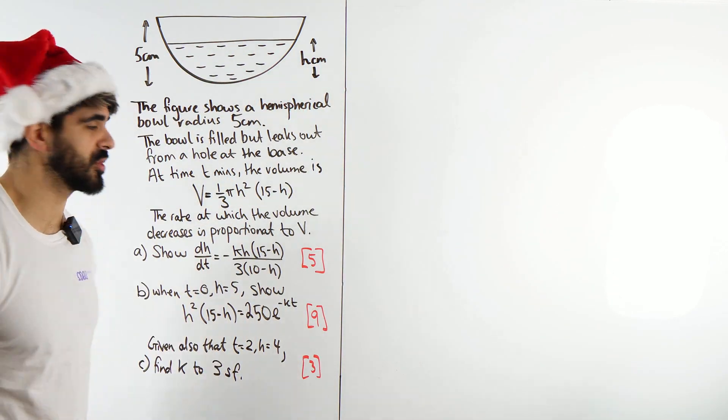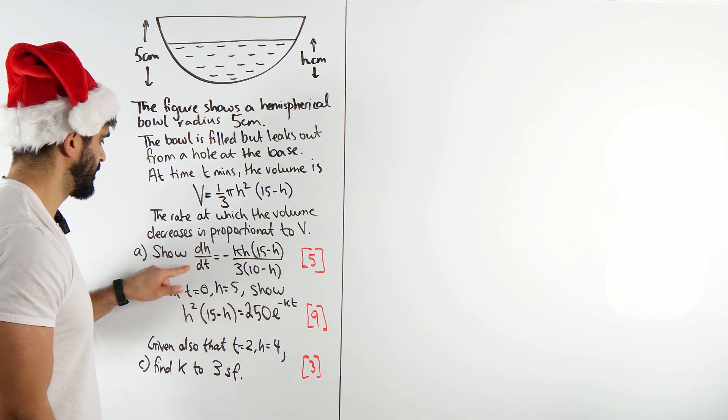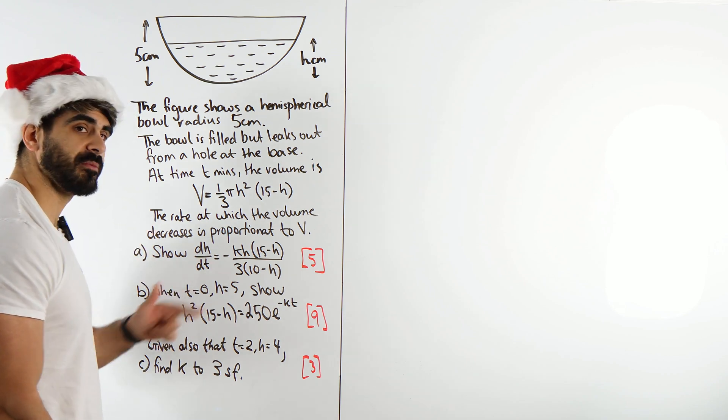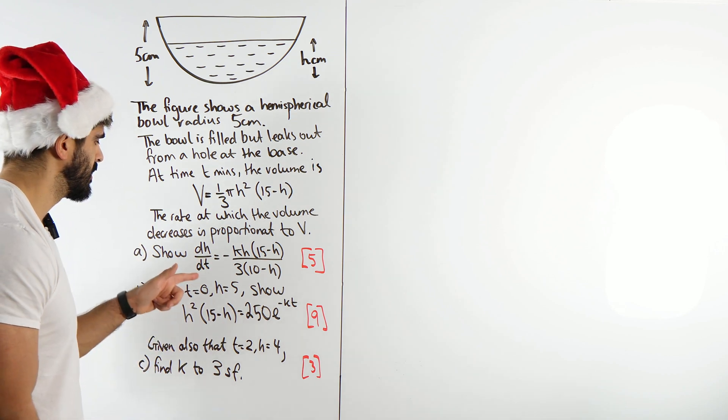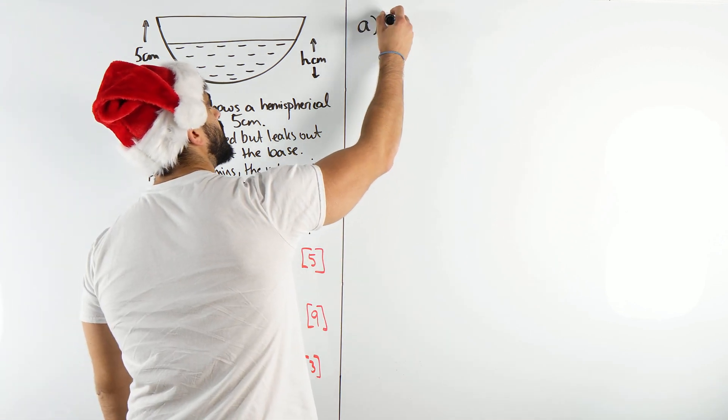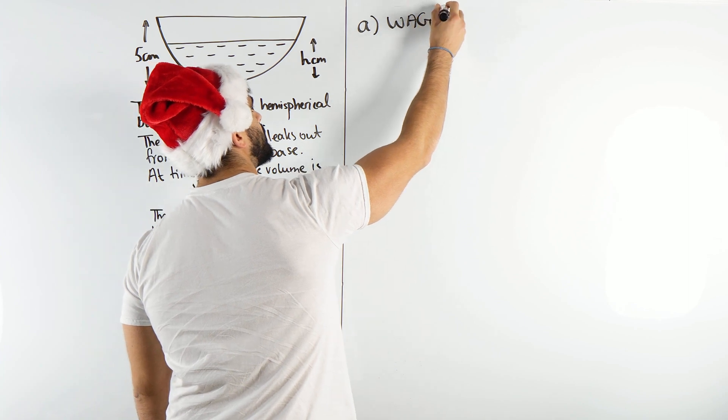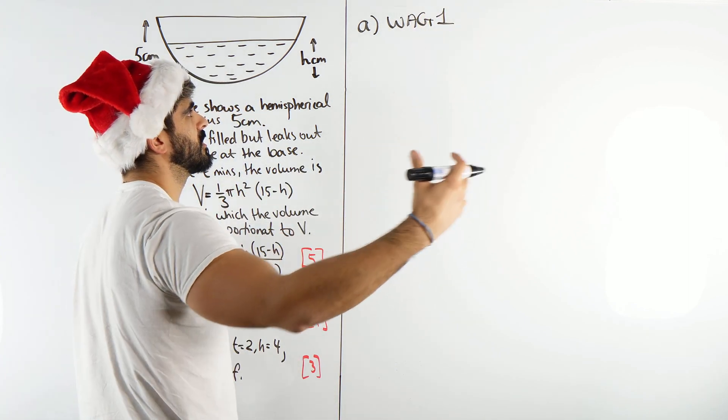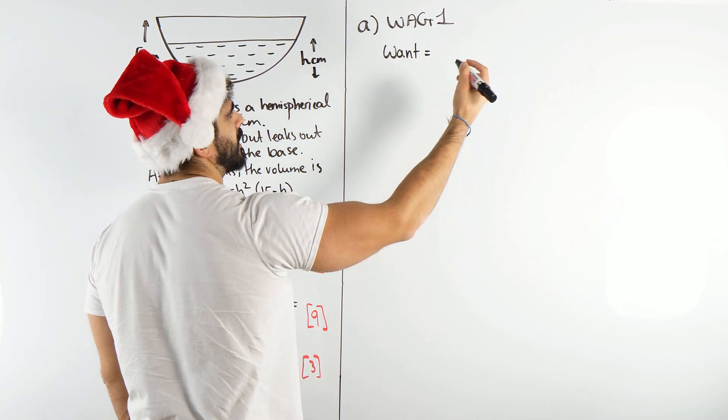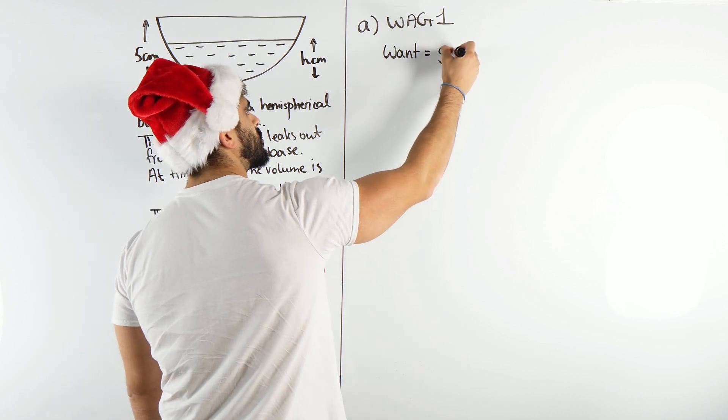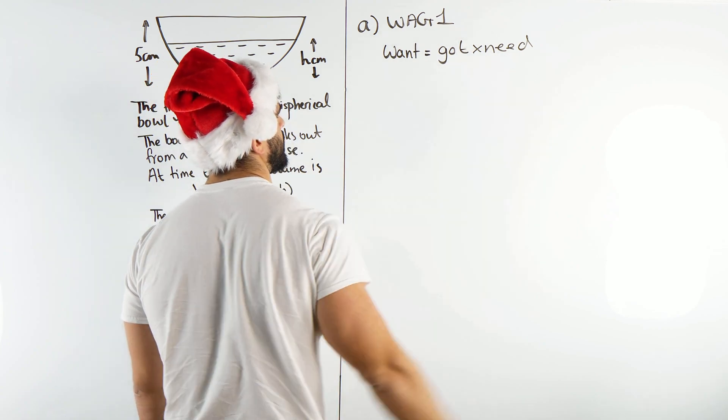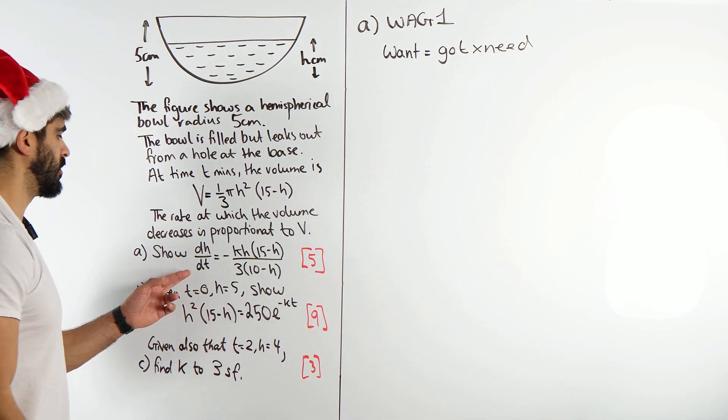This is a classic chain rule question. They want this. Now, whenever I say they want this, anyone who's been following me for a long time and all of my students on my course will know exactly what this is. It's the WAG1 formula. What is the WAG1 formula, you might be asking? WAG1 is what you want. What you want is equal to what you've got times what you need. So, what do we want? We want dH by dT.